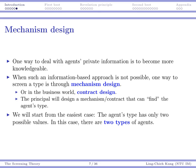Sometimes the information-based approach is not possible. In that case, we try to find other ways — this is the so-called mechanism design approach, or in the business world, contract design. Knowing there is private information, I design a mechanism or contract so that I can find my agent's type. I offer the contract and observe what my agent does in response, then try to infer their type from their actions.